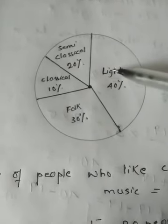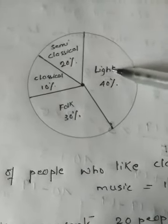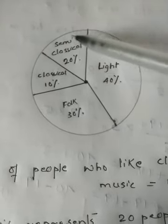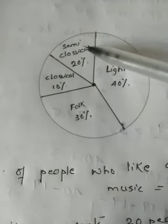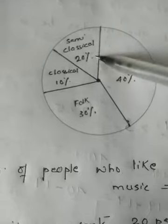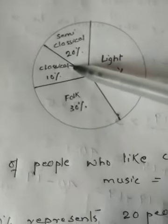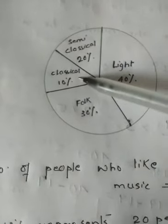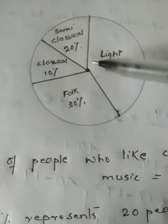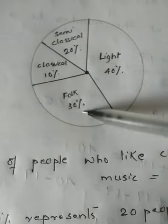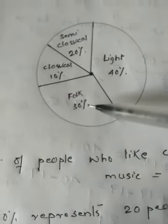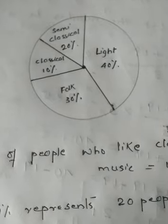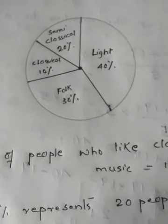According to the pie chart, light music was admired by 40 percent of the young people, semi-classical music was admired by 20 percent, classical music was liked by 10 percent, and folk music was liked by 30 percent. Now the first question they have asked from this pie chart is to answer the following.